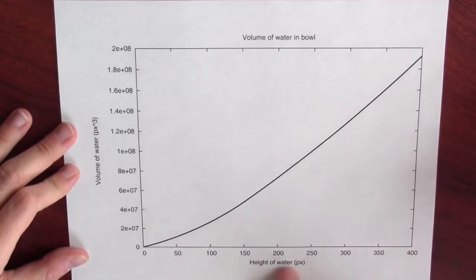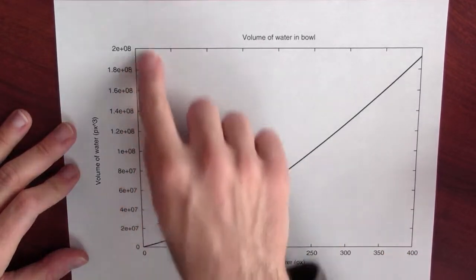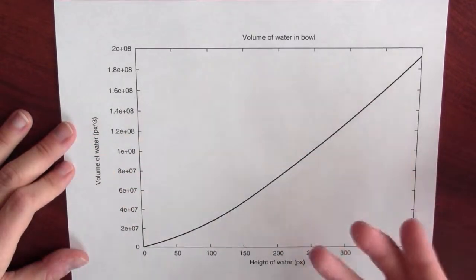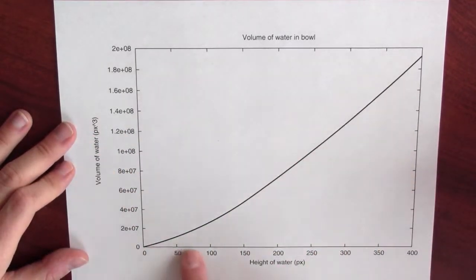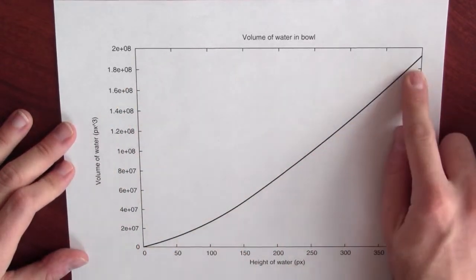So here on the x-axis, I'm plotting the height of the water, and on the y-axis, I'm plotting the volume of water in the bowl. And you can see that when the water is deeper, there's more water in the bowl. And this is an increasing function.